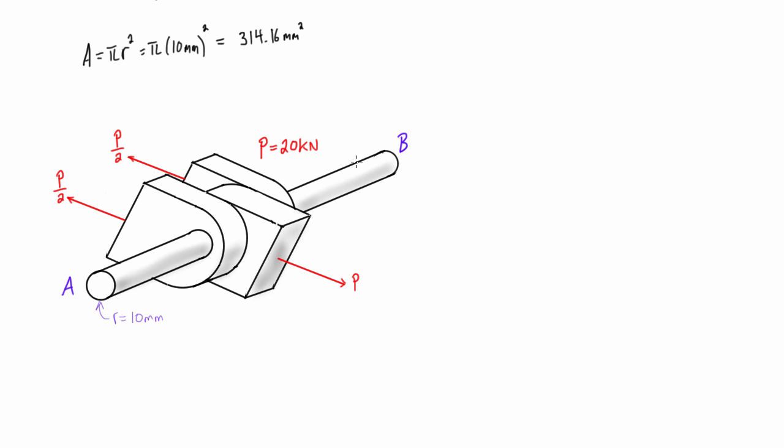do our top-down view here. So we're gonna have A on this side and we're gonna have B on that side. So when we look at this, we're going to have P over 2 pressing up, and then in that direction, which is this direction, and then we're gonna have P going down, and